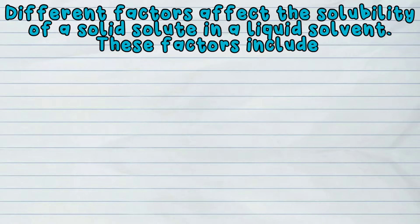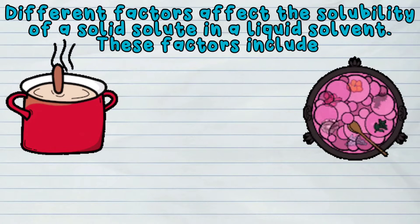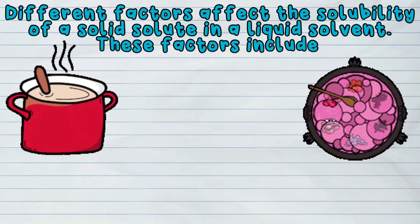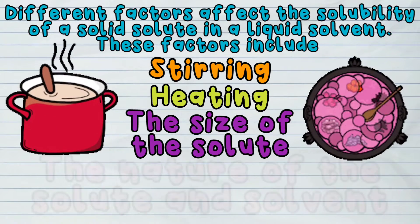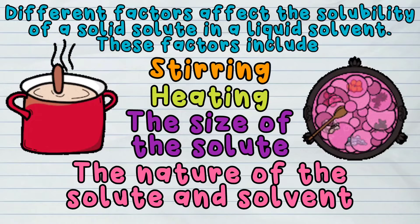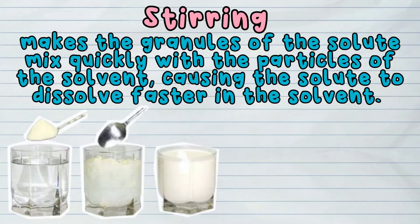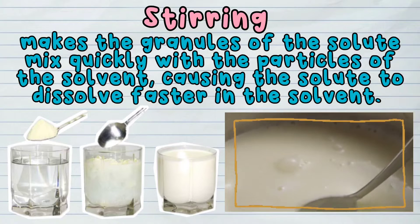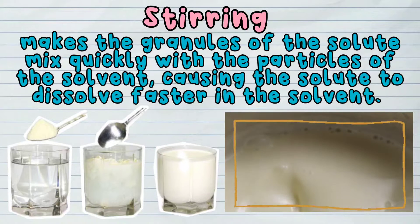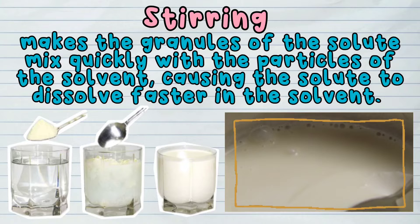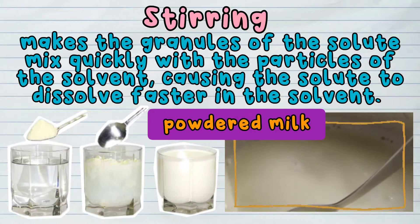Different factors affect the solubility of a solid solute in a liquid solvent. These factors include stirring, heating, the size of the solute, and the nature of the solute and solvent. Stirring makes the granules of the solute mix quickly with the particles of the solvent, causing the solute to dissolve faster. For example, powdered milk dissolves faster in water when stirred.